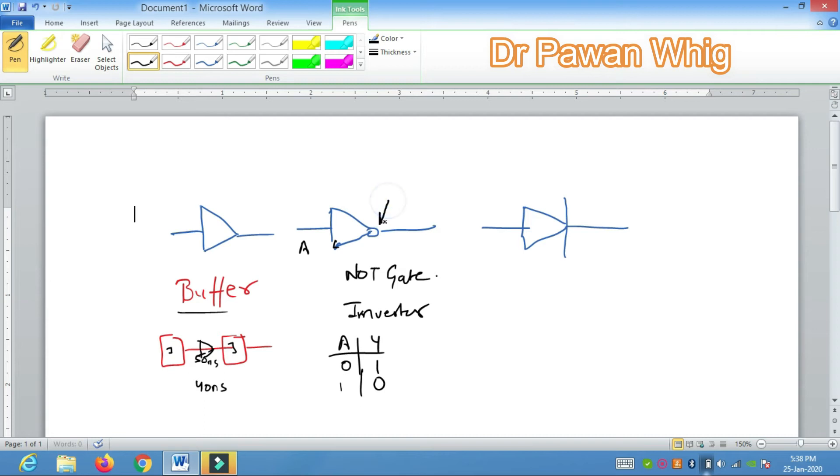Mind it, one very important thing is in NOT gate there is a bubble. If there is a bubble, if there is no bubble then it is a buffer. So mind it, whenever you draw NOT gate, particularly in digital electronics, you have to place this bubble.